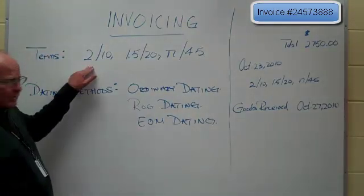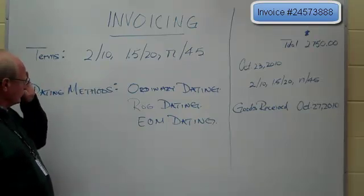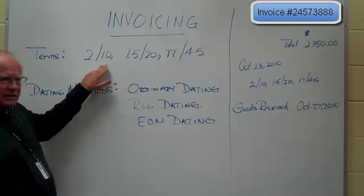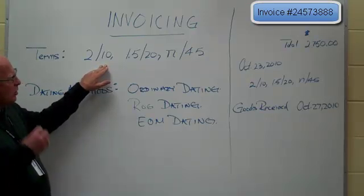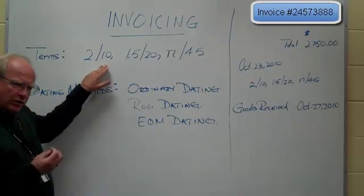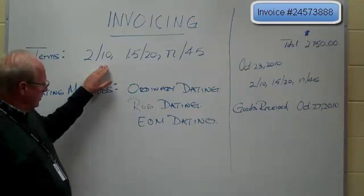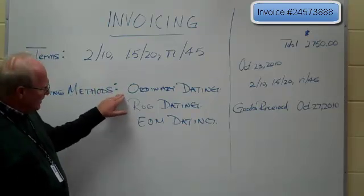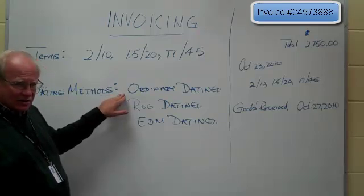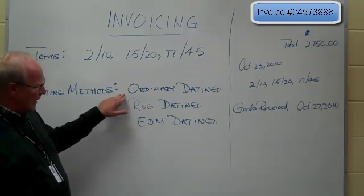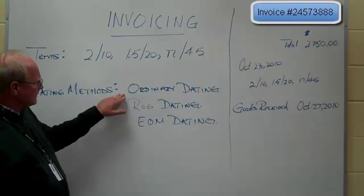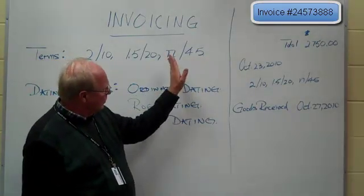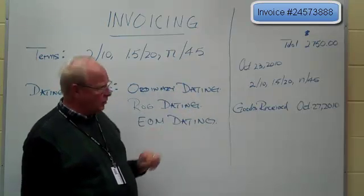Now let's talk about these terms. The terms say that for the first 10 days — but first we have to decide where to start counting the days. There are three types of dating methods. One is ordinary dating, and that's the normal way business is usually done. You'll recognize it because there will be nothing after the terms.